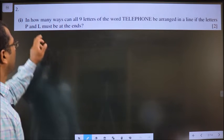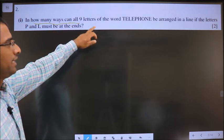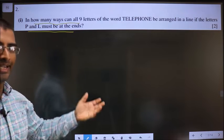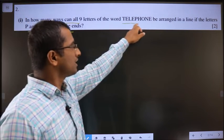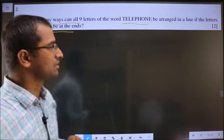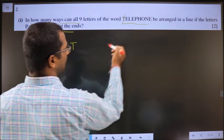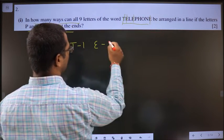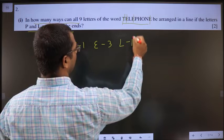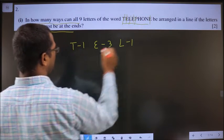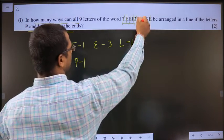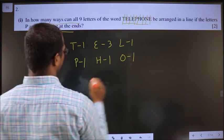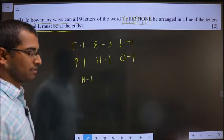Question 2. In how many ways can all 9 letters of the word be arranged in a line if the letters P and L must be at the ends? Whenever you come across a word, first write how many times each letter appears. T is present once. E is present 3 times. L is present once. P is present once. H is present once. O is present once. N is present once.